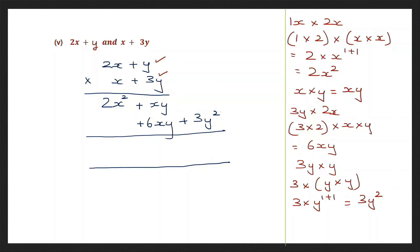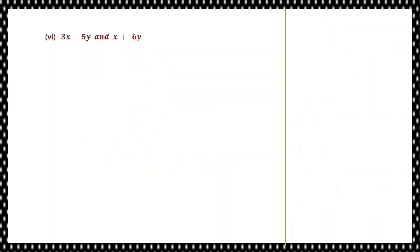Now let's work out x squared — we have 2x squared. Going on to the xy column, this is 1xy and 6xy. Signs are the same, put the same sign and add: 6 plus 1 is 7xy, plus 3y squared. So we have 2x squared plus 7xy plus 3y squared.